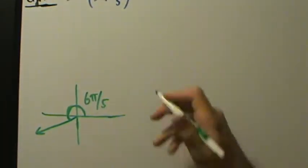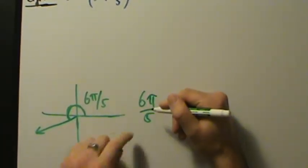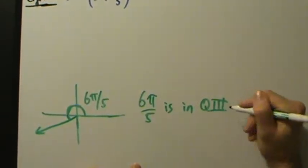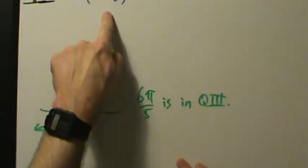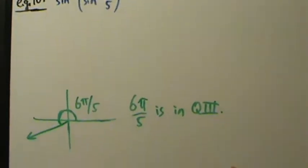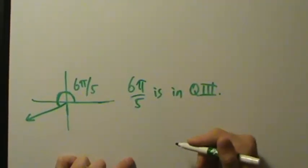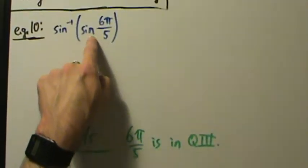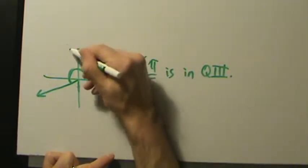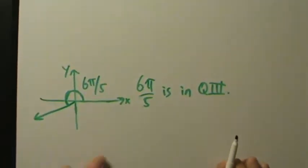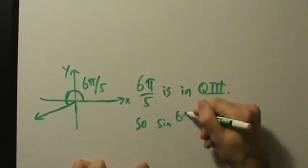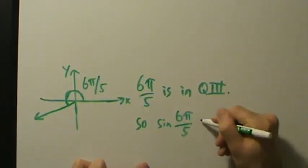So 6π over 5 is in quadrant 3. What does that mean about the sine of 6π over 5? If you have an angle in quadrant 3, then sine is negative. Remember, the sine function corresponds to the y-coordinate, and if you're in quadrant 3 you're below the x-axis, so your y-coordinate is negative. So sine of 6π over 5 is negative.